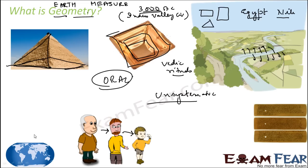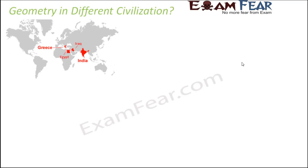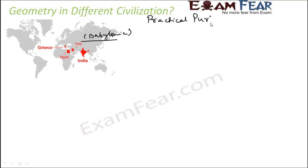Geometry is nothing but measuring the earth, and the need came from the Nile civilization where they wanted to measure pieces of land. The civilizations developed in BC — Greece, Iraq, Egypt, and India — all used geometry for practical purposes. Iraq, as you may know, is the Babylonian civilization. These civilizations used geometry for practical purposes, not as a systematic science. For example, Egyptians used geometry to recreate land boundaries after floods.